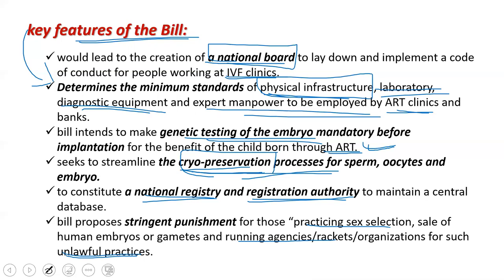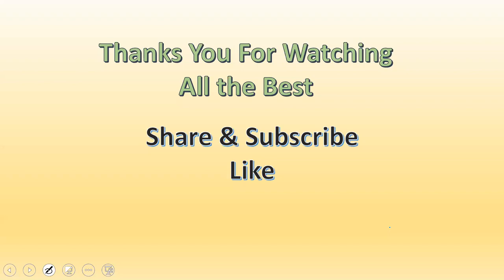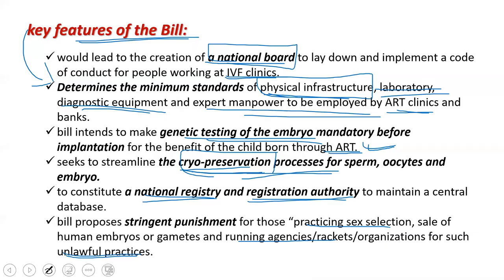This bill also proposes stringent punishment for those participating in sex selection, sale of human embryos or gametes, or running agency rackets and unlawful organizations involved in such practices. In the overall picture, this is one of the most extraordinary and epic bills passed to date by the Indian government and approved by the Cabinet.